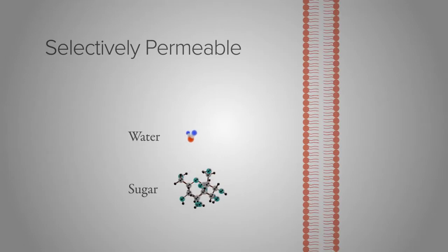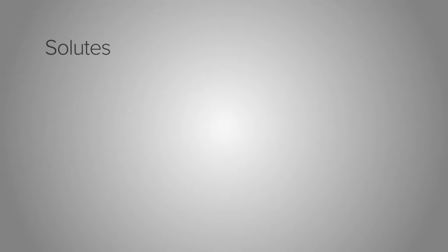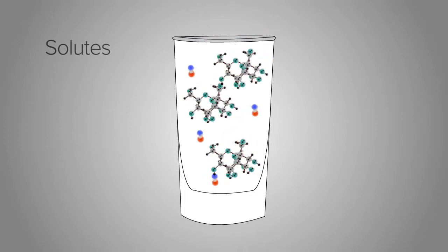The reason that water travels across a selectively permeable membrane is based on molecules called solutes. What is a solute? A solute is a substance that is dissolved in another substance. For example, when sugar is dissolved in water, it is known as a solute.